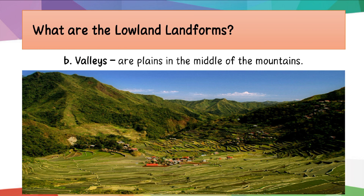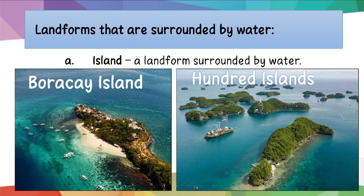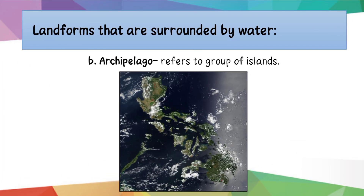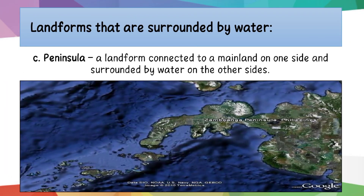These are landforms that are surrounded by water. An island is a landform surrounded by water. An archipelago refers to a group of islands. A peninsula is a landform connected to a mainland on one side and surrounded by water on the other sides.